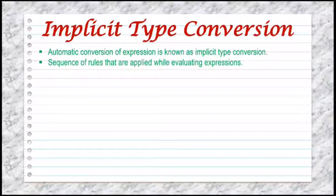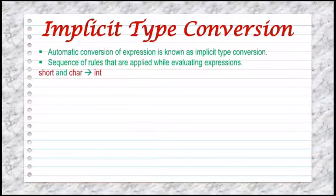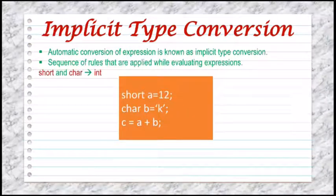The following are the sequence of rules applied while evaluating expressions. All short and char types are automatically converted to int. That means if you use short and char data in an expression, these data types will be converted into int in the result. For example, if we declare variable a as short and b as character, then a plus b will result in integer, because short and character are automatically converted into integer.